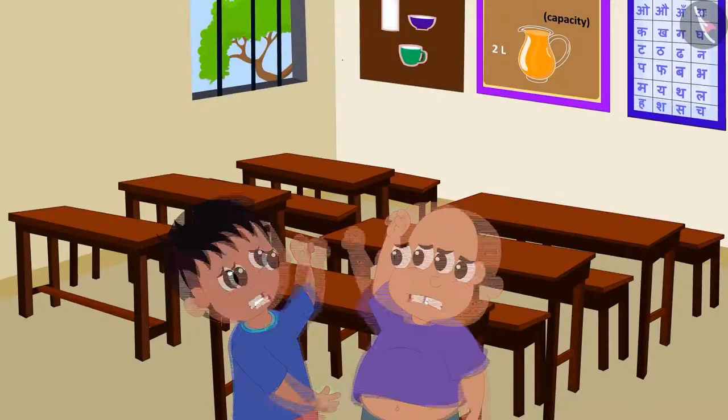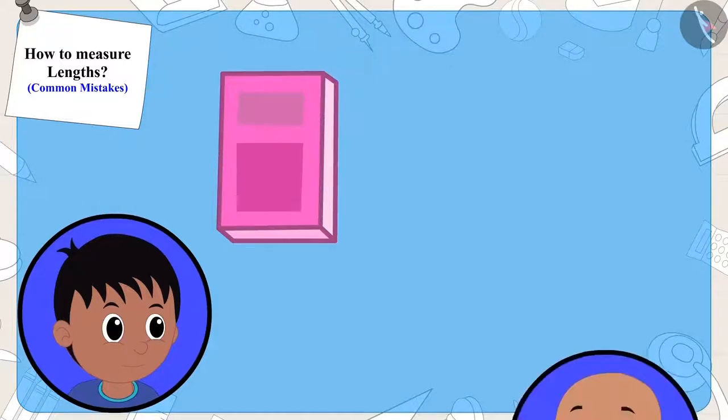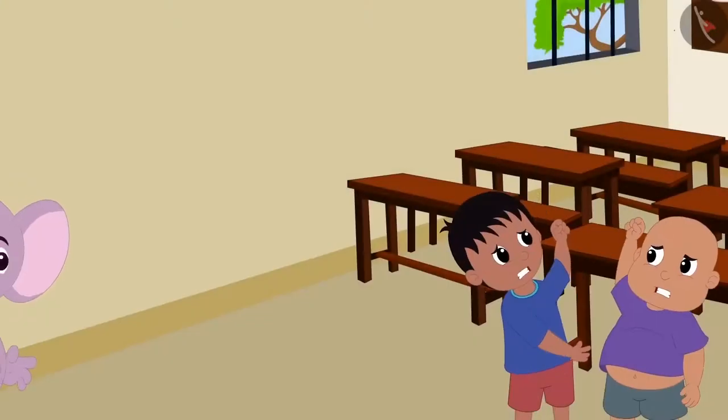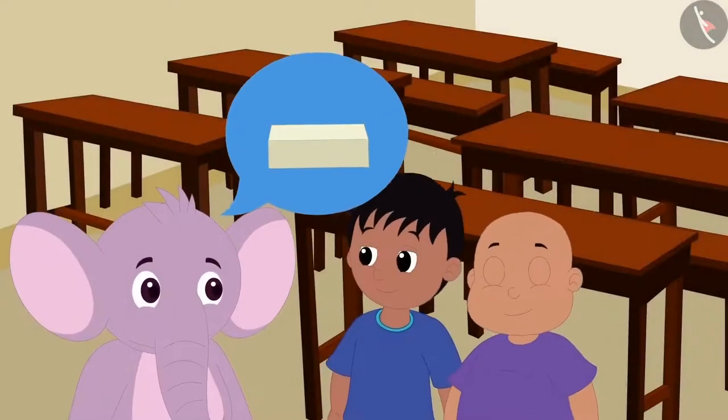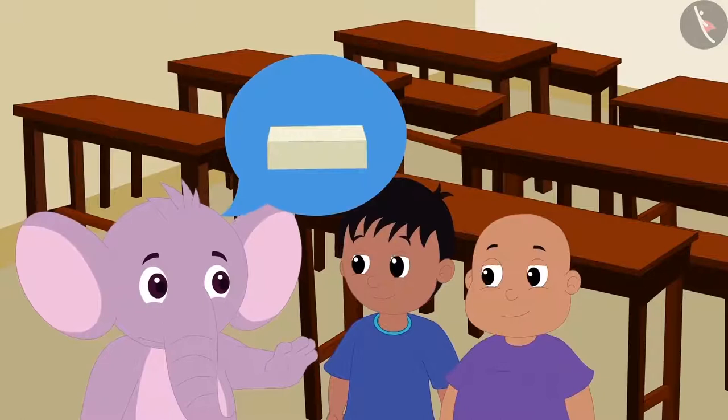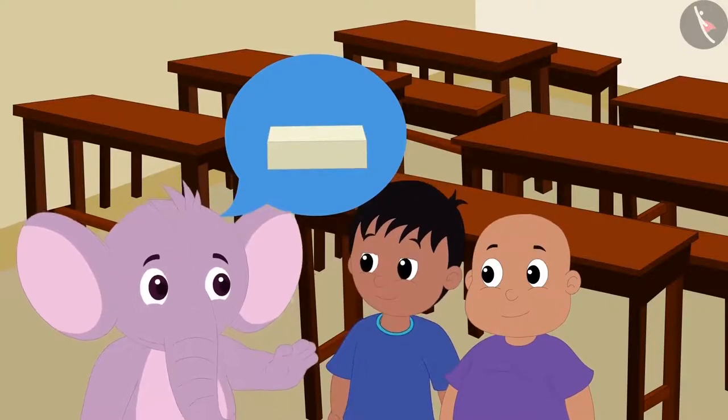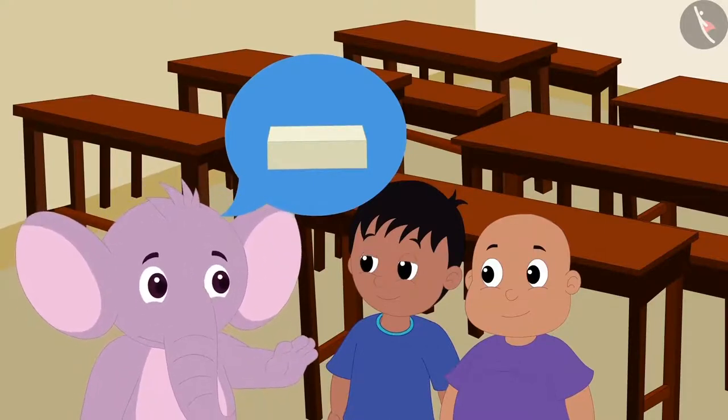Raju and Bablu are fighting in class. But why? Raju is saying that his notebook is longer and Bablu is saying that his notebook is longer than Raju's. Appu saw them fighting and told them that they can use an eraser to measure the length of the notebook. This way, they will know which of the two notebooks is longer.